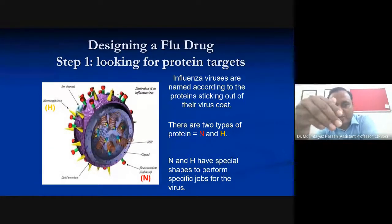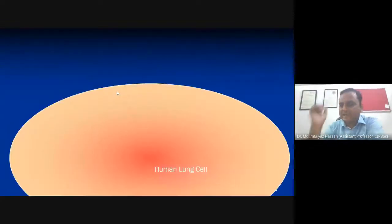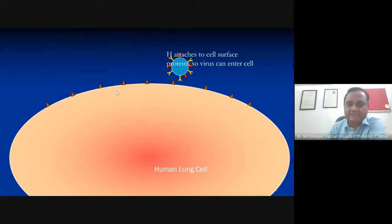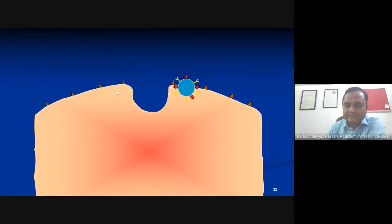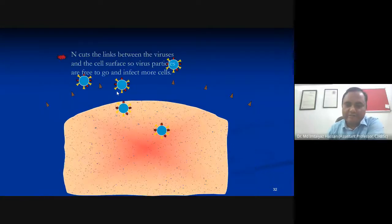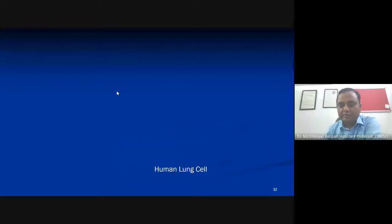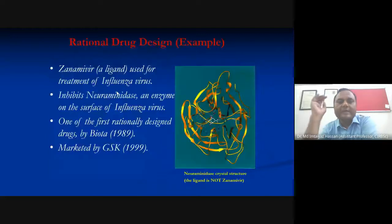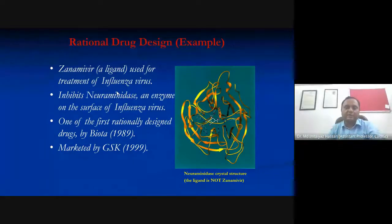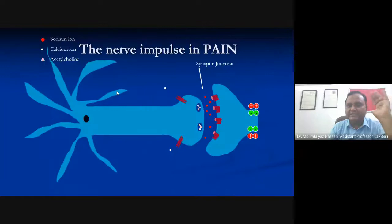The influenza virus contains hemagglutinin and neuraminidase on its surface. The virus binds to cell surface receptors on human lung cells, inserts into the cell, releases its genetic material, multiplies, and forms new virus particles. For the release of new viruses, neuraminidase is needed. If you interfere with neuraminidase activity, you prevent the virus from multiplying and infecting other cells. The compound Zanamivir was designed by analyzing the structure of the neuraminidase enzyme; it has been marketed by GSK since 1999 as a well-known example.